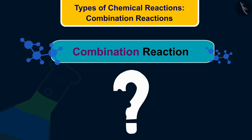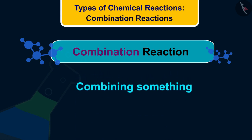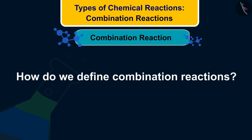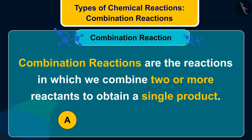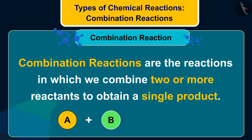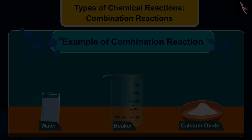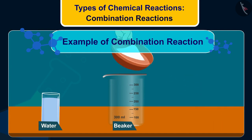The word combination tells us that we are combining something. So how do we define combination reactions? Combination reactions are the reactions in which we combine two or more reactants to obtain a single product. Let us take an example — take some calcium oxide, which is also called quicklime.